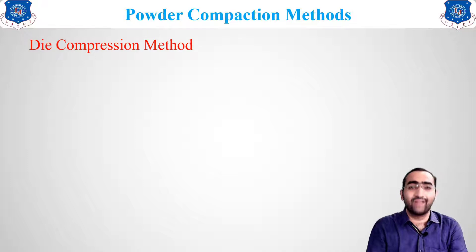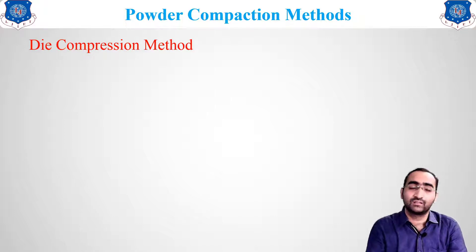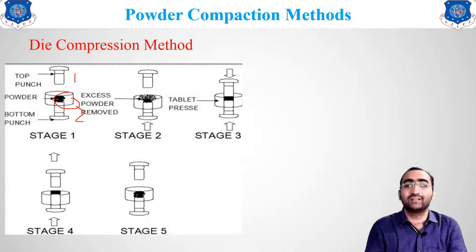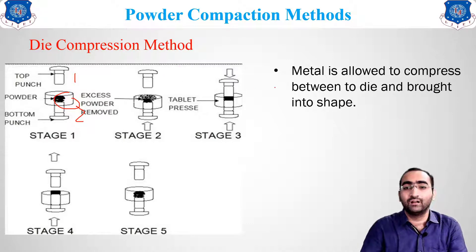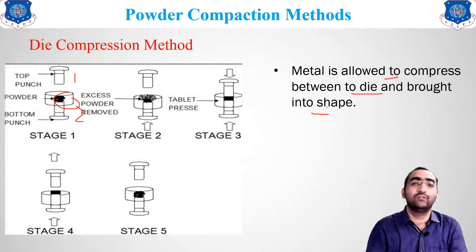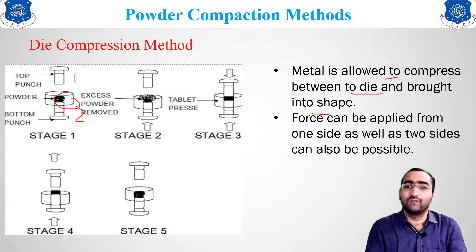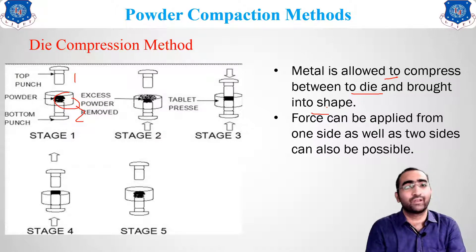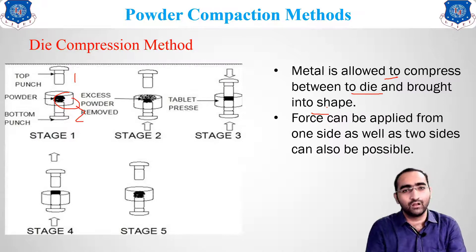The first method is die compression. Two dies are taken, powder is placed between them and pressed — this is die compression. The metal is compressed between the dies and brought into shape. Forces can be applied from one side or both sides, depending on the material being used.